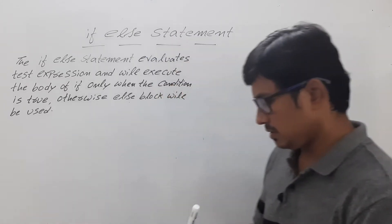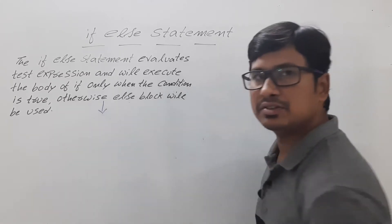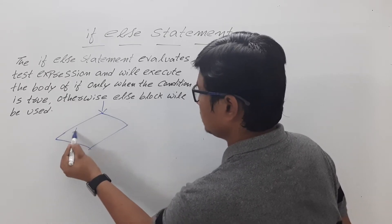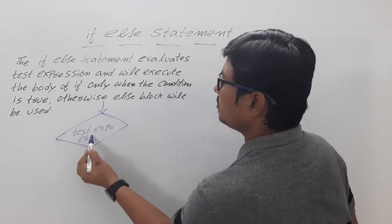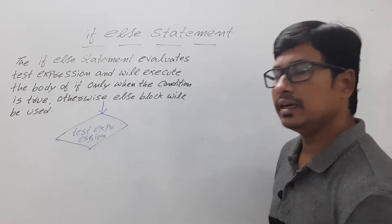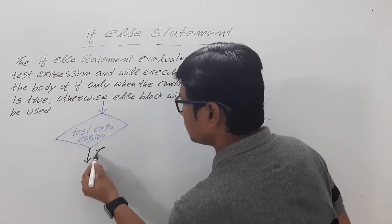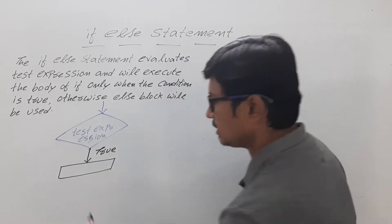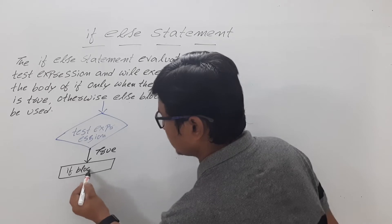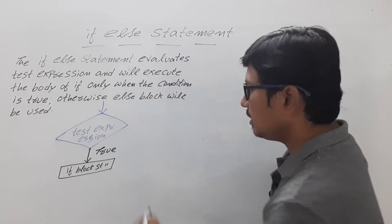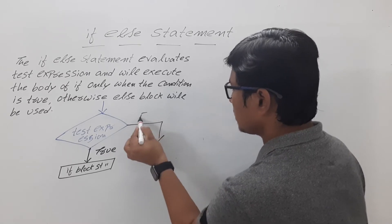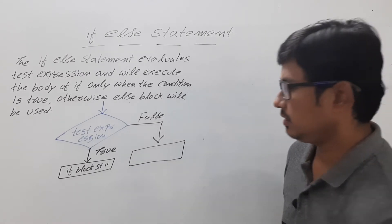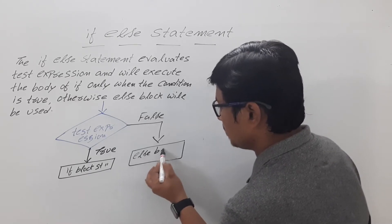The flowchart for if-else will be: we will have a test expression. The test expression can be either true or false. If it is true, the statements which are in the if block will be executed. If the condition is false, the statements which are in the else block will be executed.